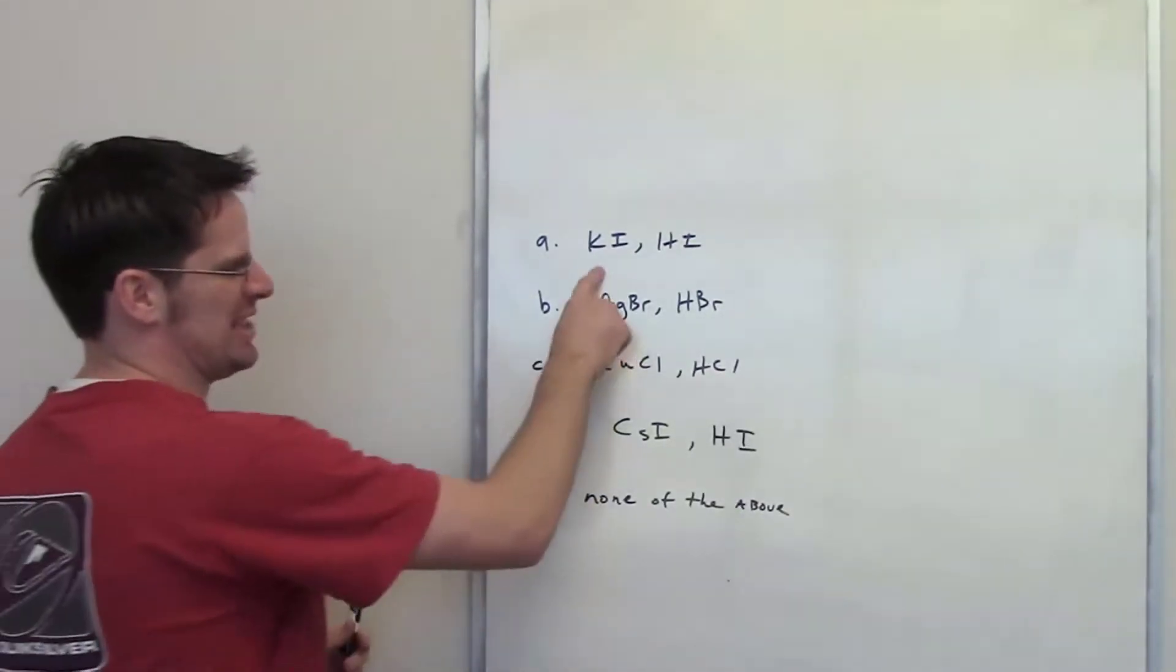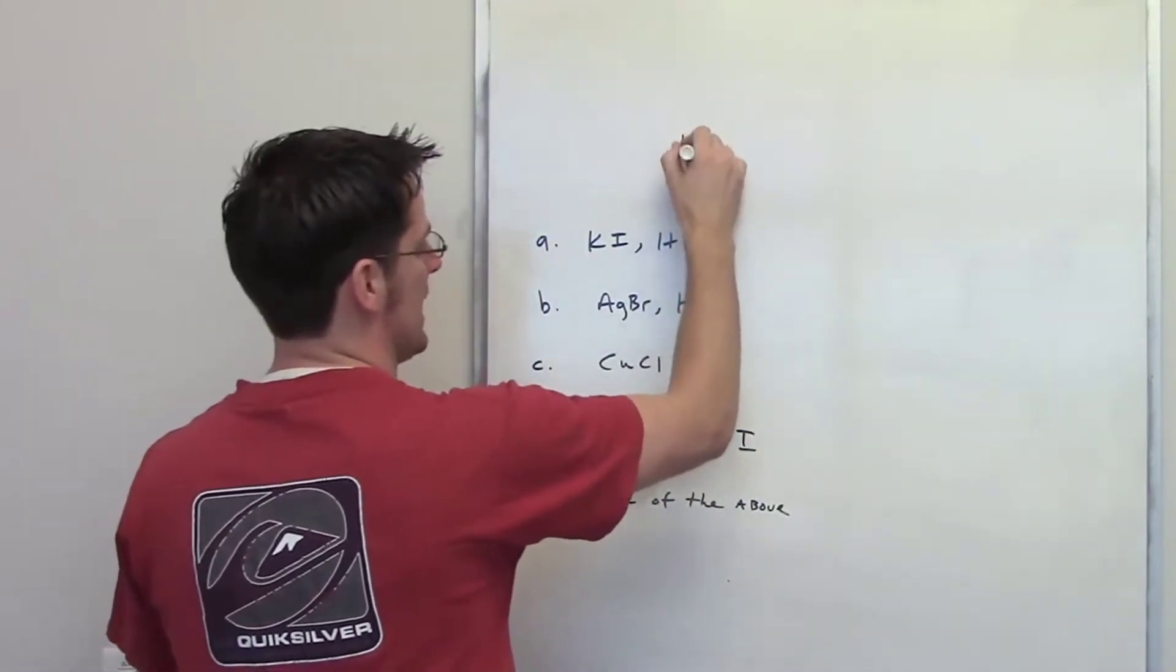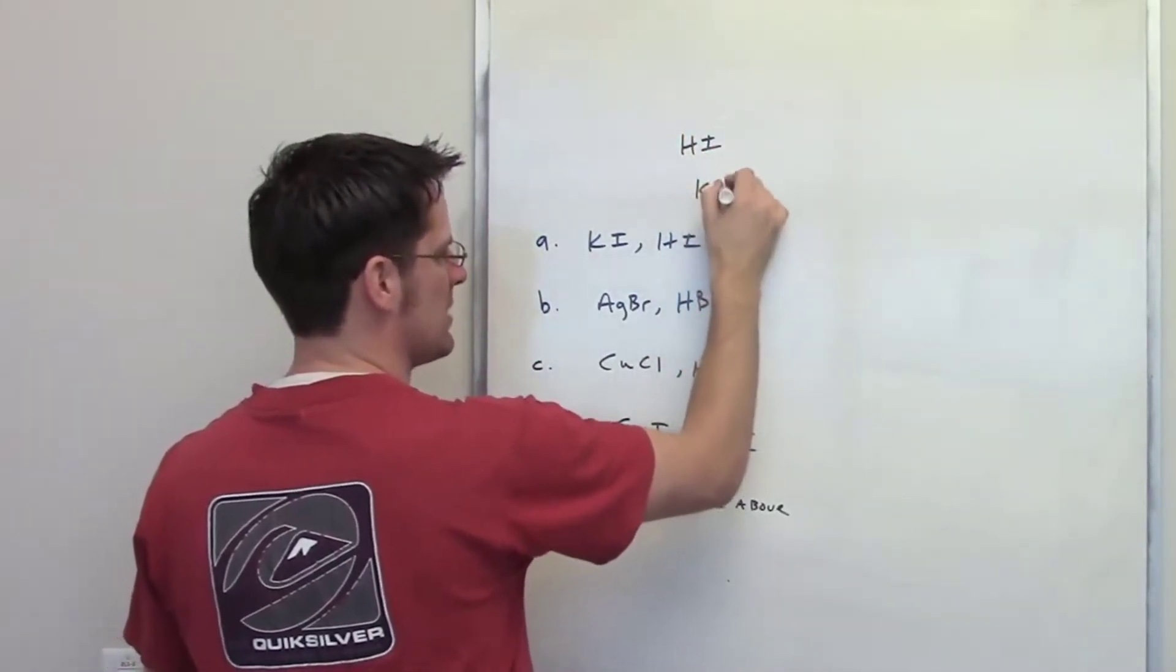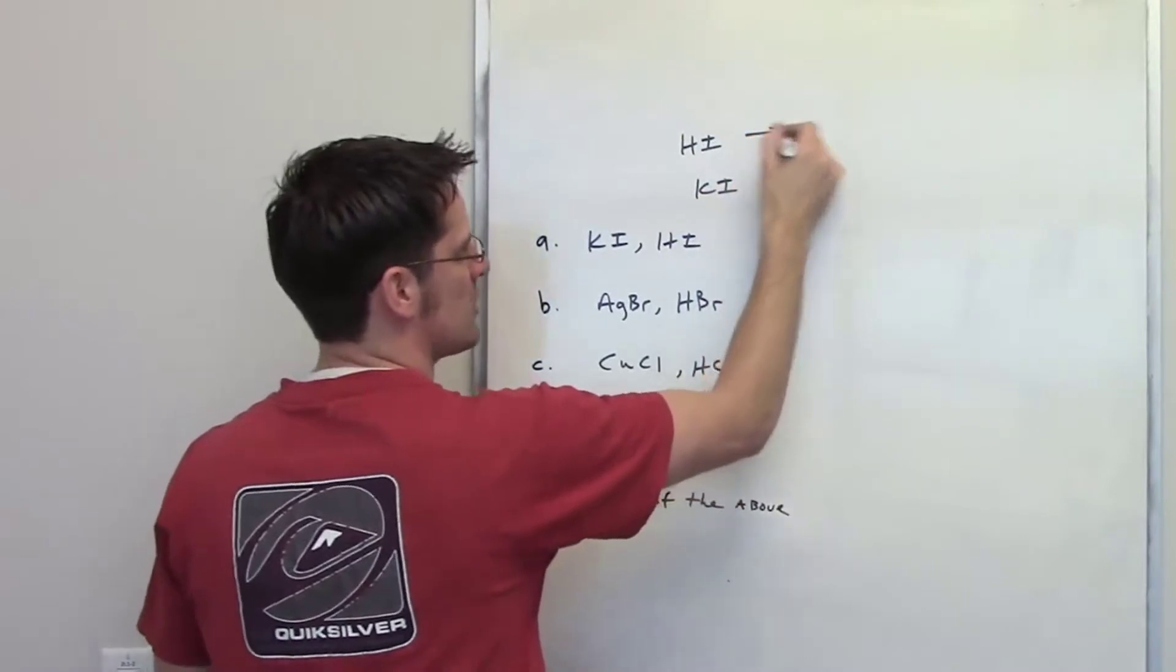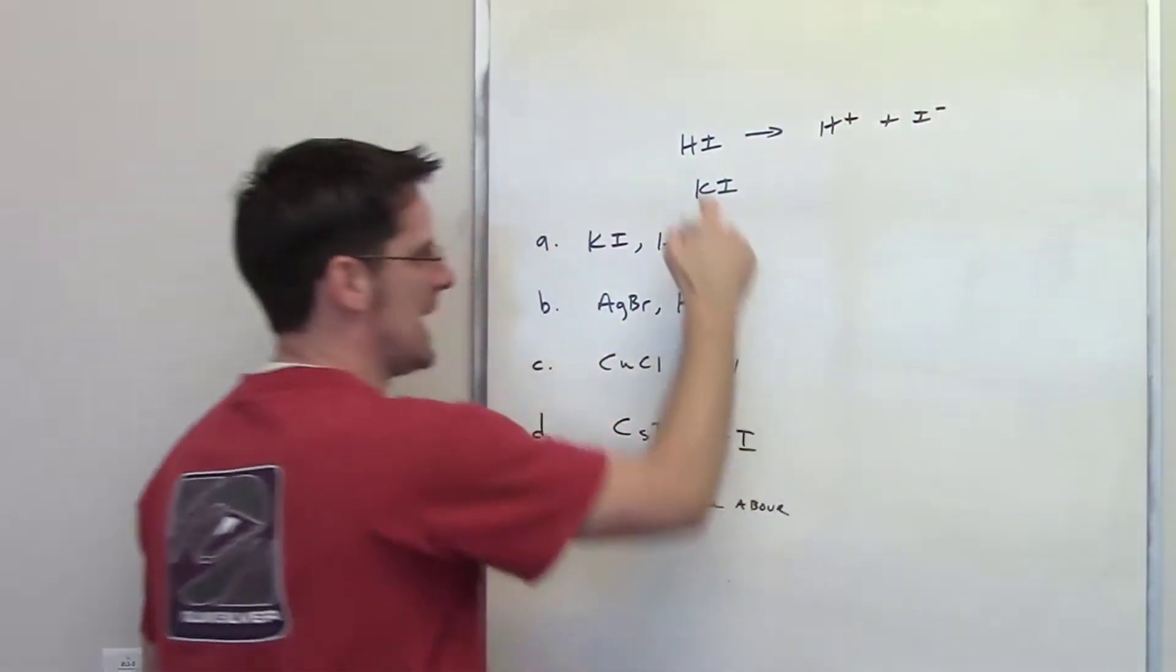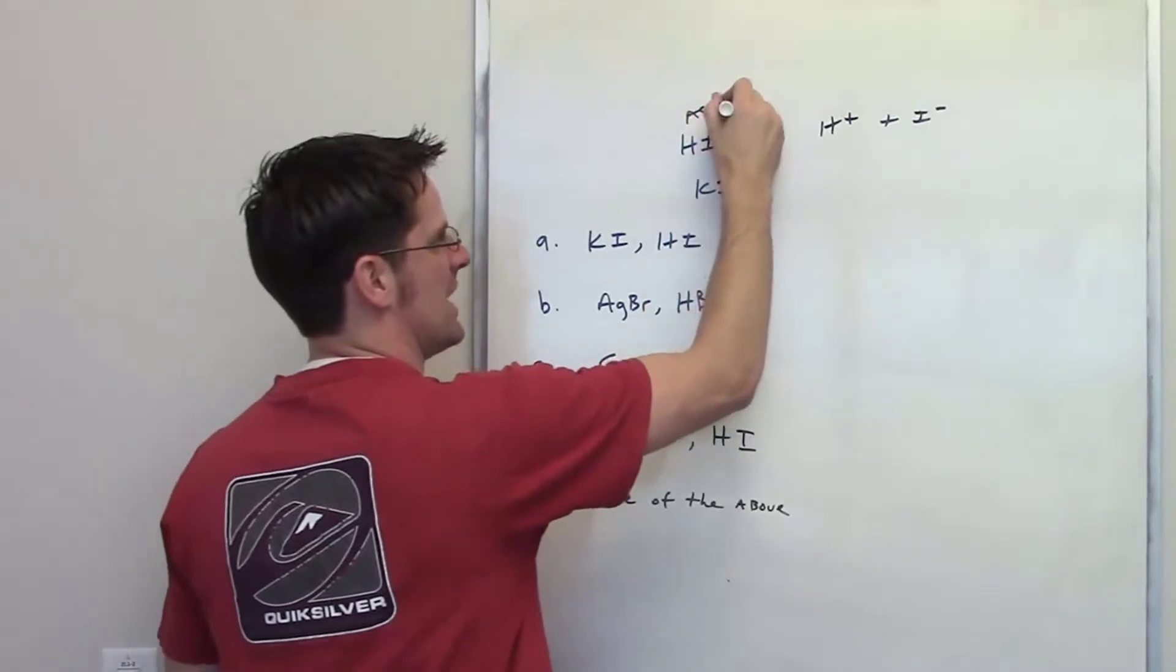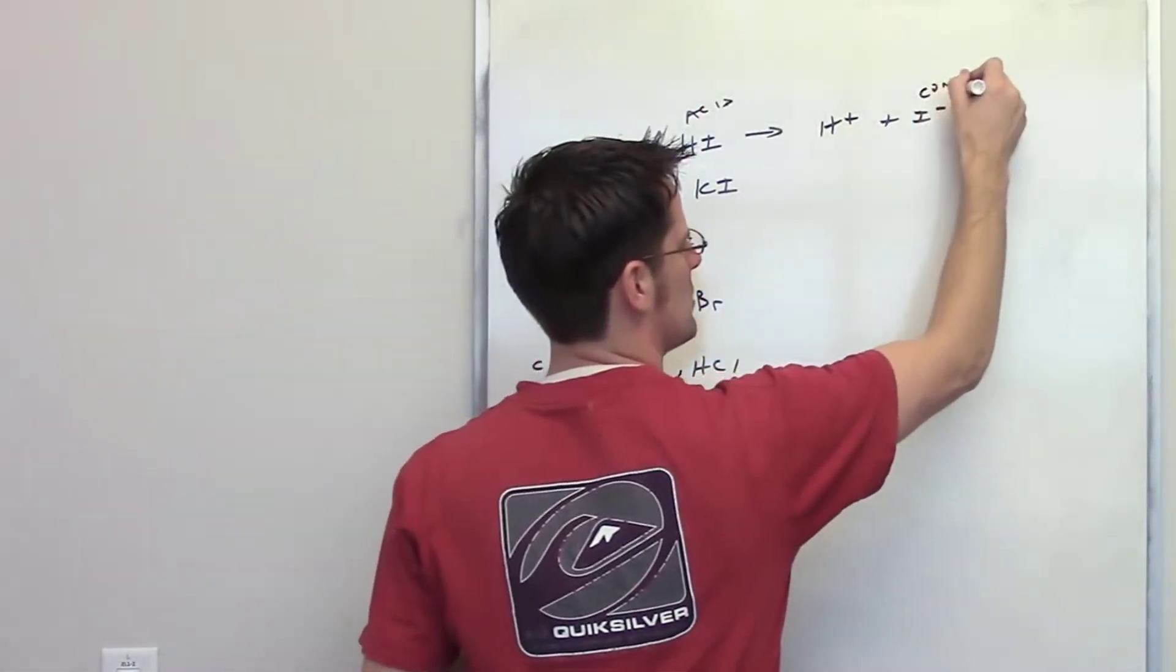For example, let's take a look at the first one. HI is an acid and KI is an electrolyte. HI dissociates to make H plus and I minus. HI is once again the acid and I minus is its conjugate base.